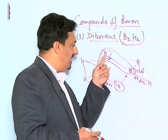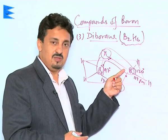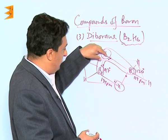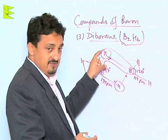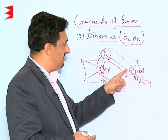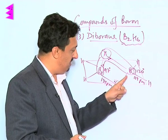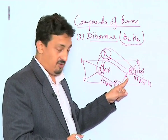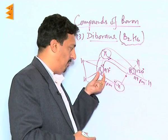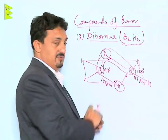It is also called a banana-shaped bond or a bridge bond because this hydrogen is acting as a bridge between the two orbitals of the two boron atoms, and these two electrons hold the three atoms together. In a similar way, one more hydrogen forms a bridge bond. These are in one plane, and these two hydrogens are perpendicular to this plane.